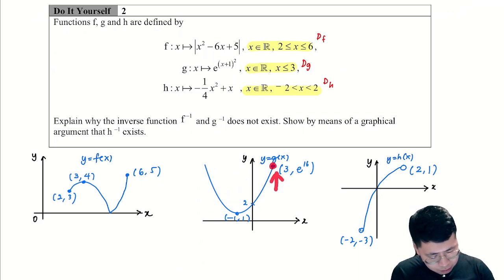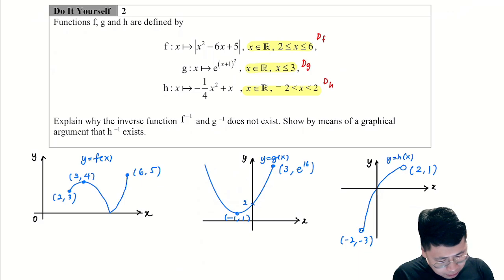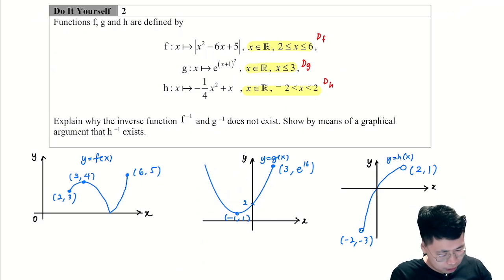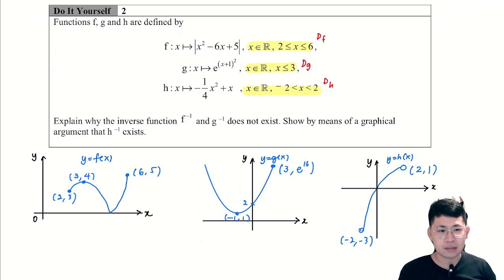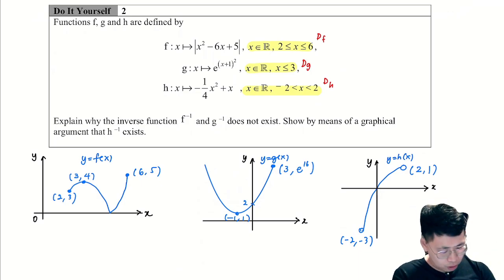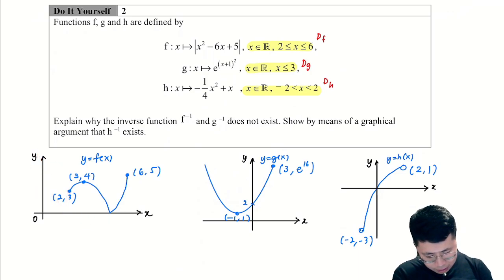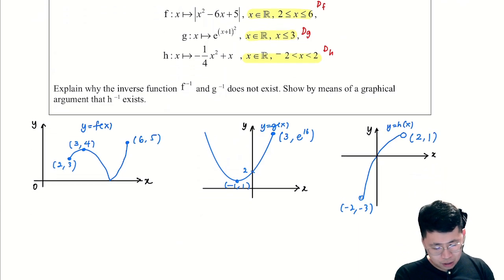The domain of f is between 2 and 6 inclusive, so we shade the two endpoints. For g, the domain is x strictly less than 3, so we use a solid circle at the endpoint. For h, the domain is negative 2 strictly less than x strictly less than 2, so we use hollow circles at both endpoints. You only need to draw the function for the defined domain — you don't need to draw the whole thing.